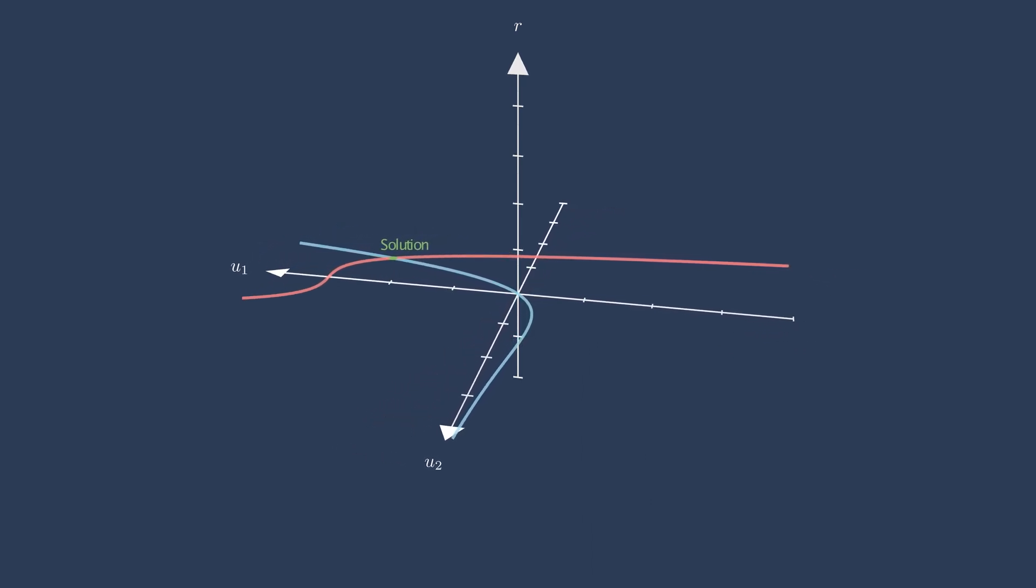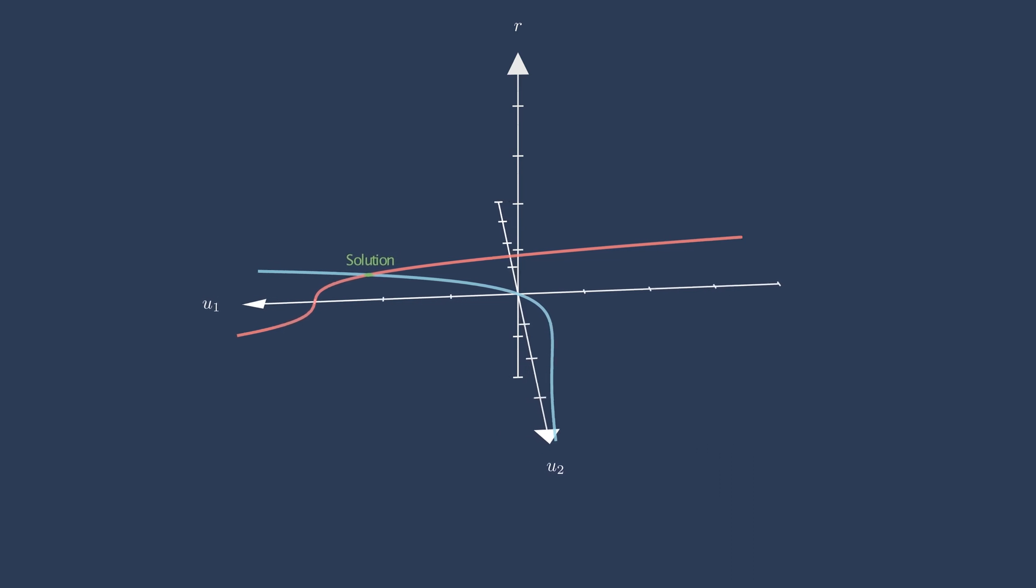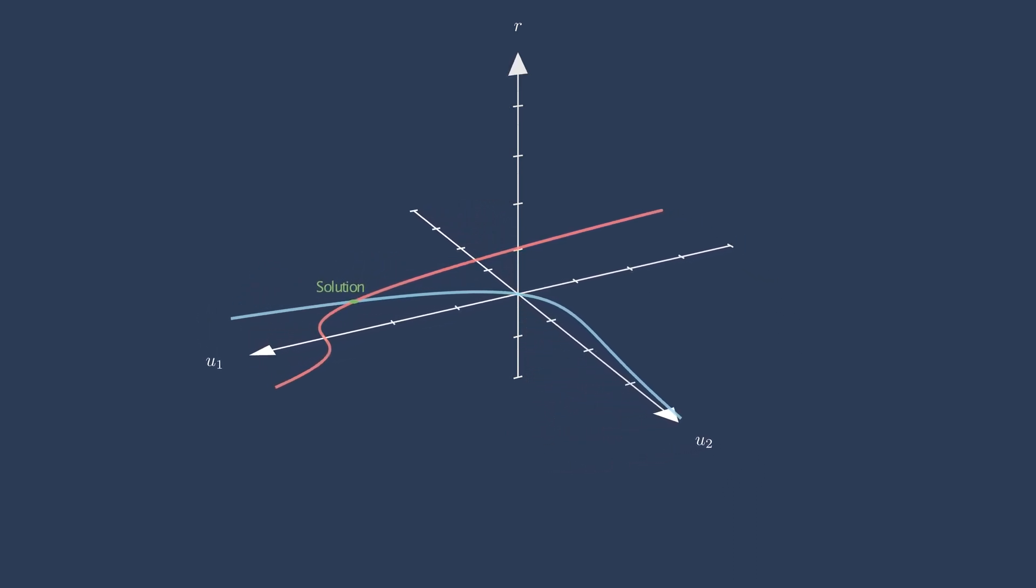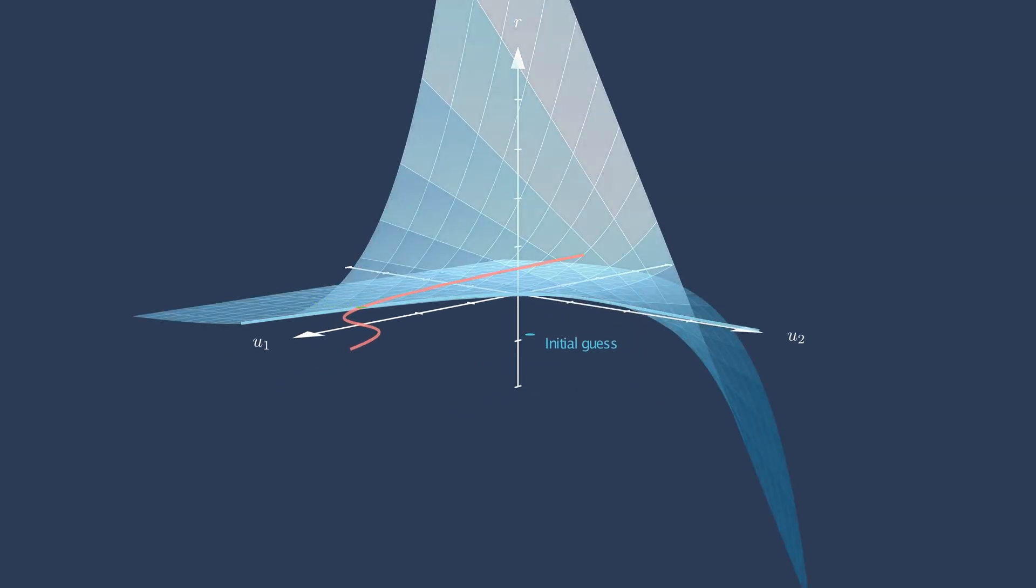The solver isn't aware of these lines or the solution to the problem, like we are. It only knows the residual values and their slopes at the current guess. Suppose our initial guess is here, represented by the blue point.